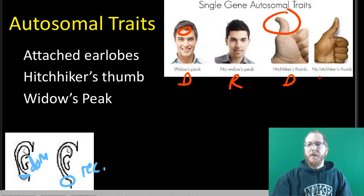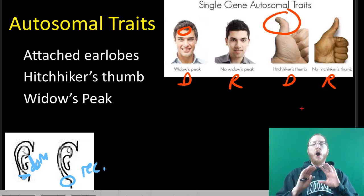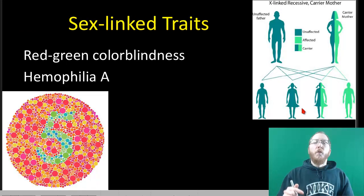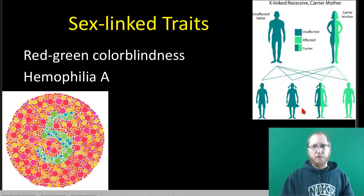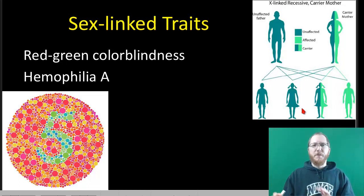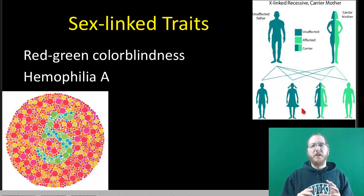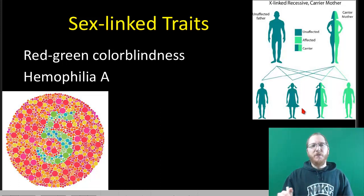So recessive versus dominant — those are just three of the autosomal traits we discussed. For sex-linked traits, we have two to discuss. There are more traits we'll pick up with genetic disorders, but right now I'm picking ones that are not necessarily earth-shattering, although one could argue hemophilia is kind of a disorder. I'll sneak it in so we have two to discuss.